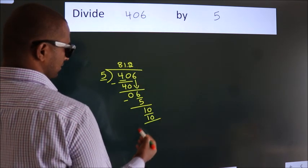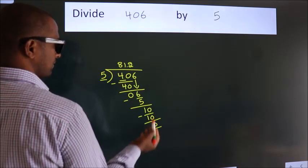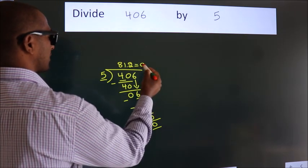Now we subtract, we get 0. We got remainder 0. So this is our quotient.